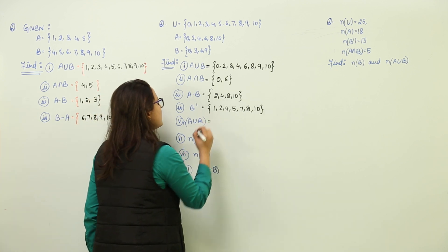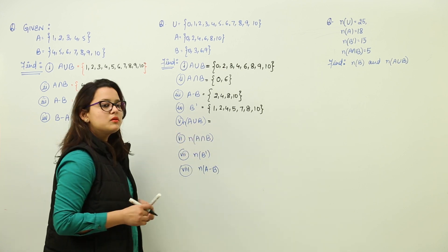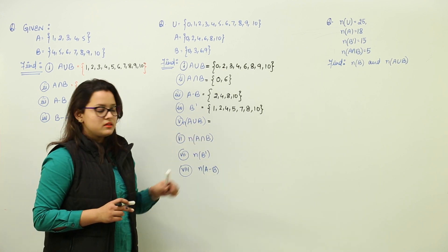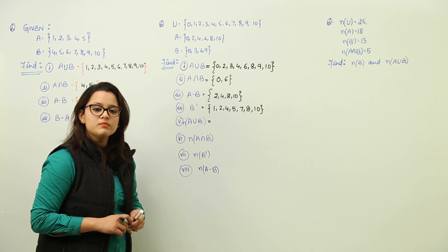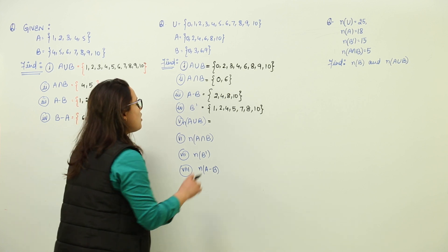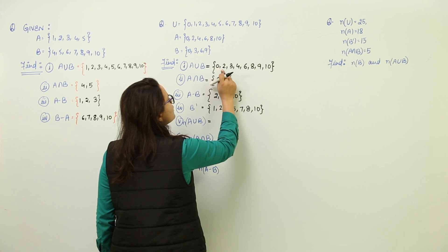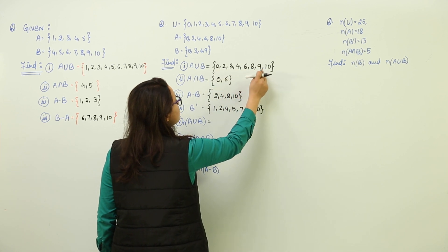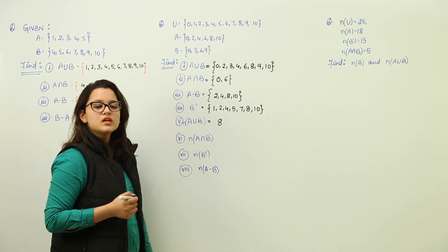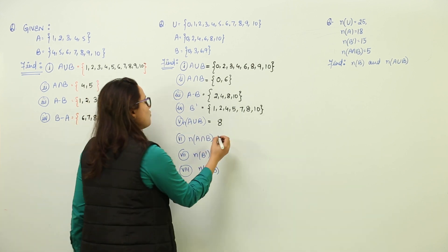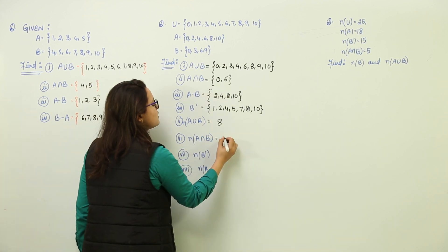Next we have to find out the cardinal number of A union B. Cardinal number means N, representing the number of elements present in the set. We have just calculated 8 elements in A union B, so the cardinal number is 8. The cardinal number for A intersection B is going to be 2.